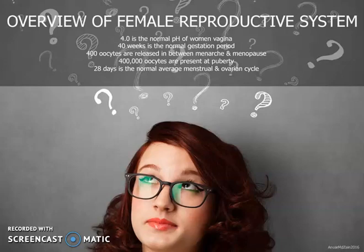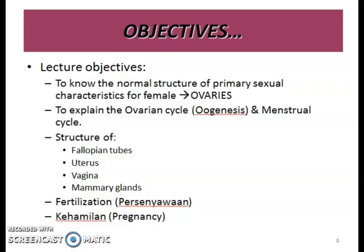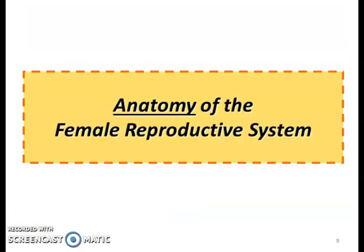28 days is the normal average menstrual/ovarian cycle. By the end of this video you should be able to know the structure of the primary sexual characteristics — the ovaries — explain the ovarian and menstrual cycles, explore the gross and microscopic view of the fallopian tubes, uterus, vagina, mammary glands, external genitalia, fertilization, and pregnancy.